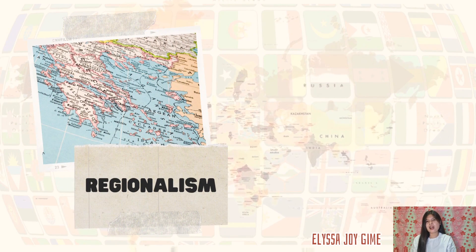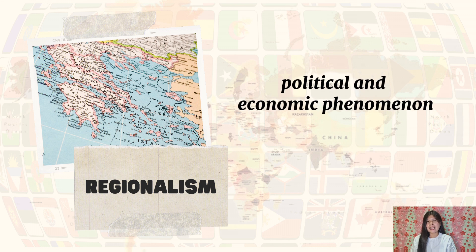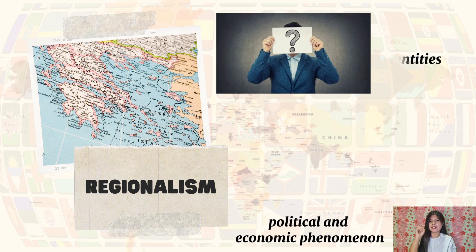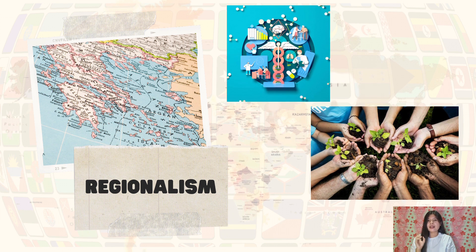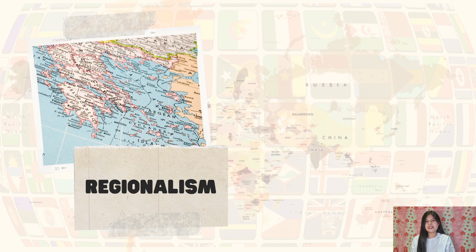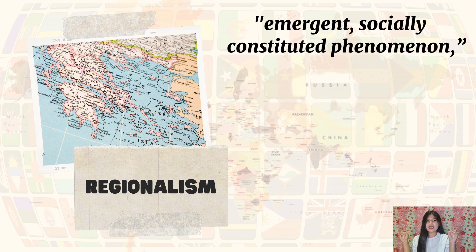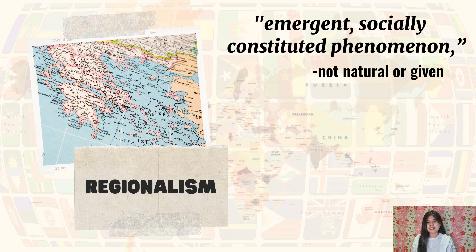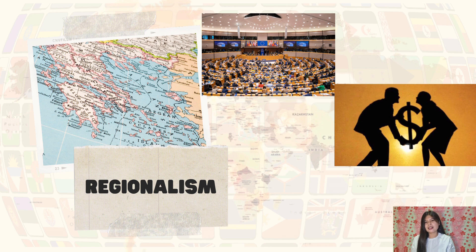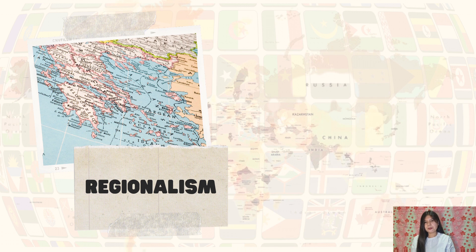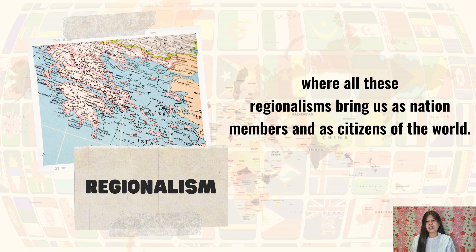Regionalism is often seen as a political and economic phenomenon. It can be examined in relation to identities, ethics, religion, ecological sustainability, and health. Regionalism is also a process and must be treated as an emergent, socially constituted phenomenon, which means regions are not naturally given. Instead, they are constructed and defined by policymakers, economic actors, and even social movements. The lesson will conclude by asking where all these regionalisms bring us as nation members and citizens of the world.